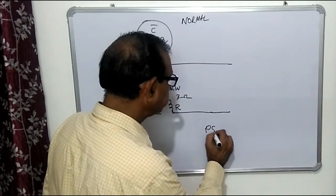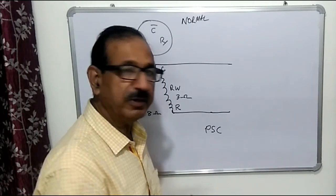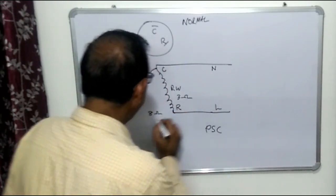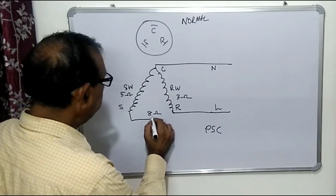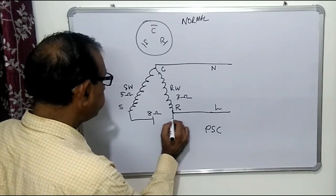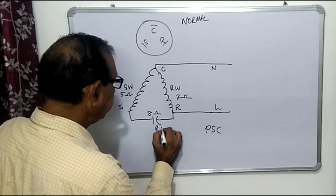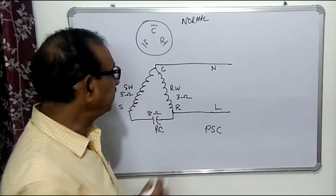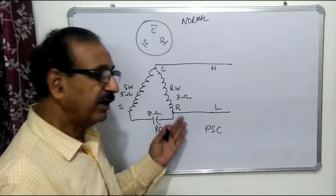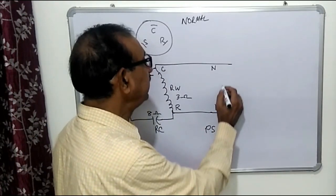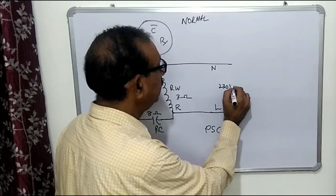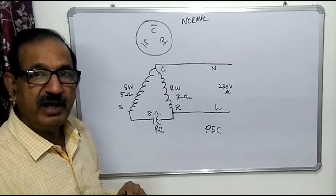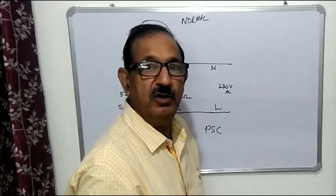To run this compressor we use the PSC circuit — Permanent Split Capacitor. We connect neutral to the common terminal and line to the running terminal, and between running and starting we connect a running capacitor. This way we can run this compressor and we can measure the current using a clamp meter. We connect 230 volt AC, so this compressor can be started directly.